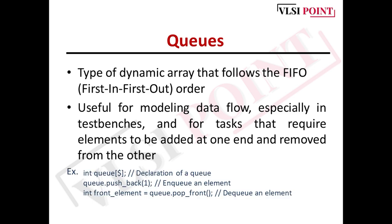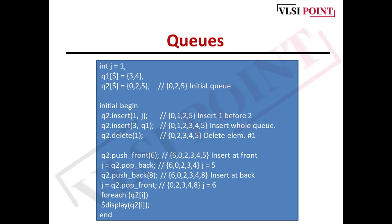We have taken int queue[$]. This is how you declare a queue. Then we have written queue.push_back(1). Here we are enqueuing an element. The next line is int front_element = queue.pop_front(). We are dequeuing an element, popping the front value from the queue and assigning that into the integer front_element. Let's discuss this example: int j = 1 and then we have taken two different queues q1 and q2. q1 = {3,4}, q2 = {0,2,5}. This is the initialization of the queue.